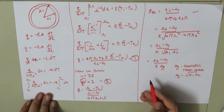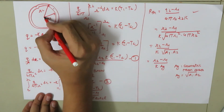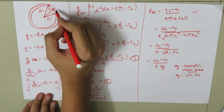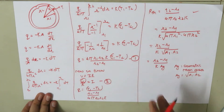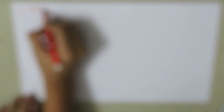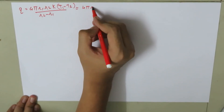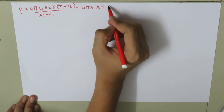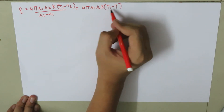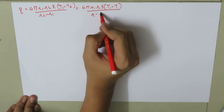Now, if we want to calculate the temperature at an intermediate radius R where the temperature is T, we use the basic equation: Q equals 4π R1 R2 K times (T1 minus T2) divided by (R2 minus R1), which also equals 4π R1 R times K times (T1 minus T) divided by (R minus R1).